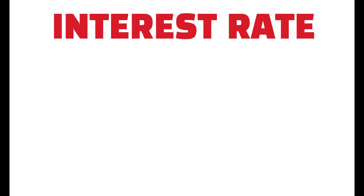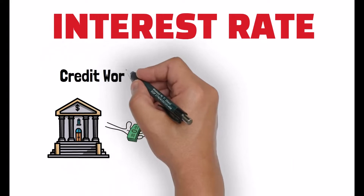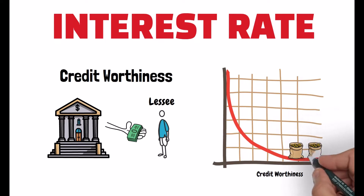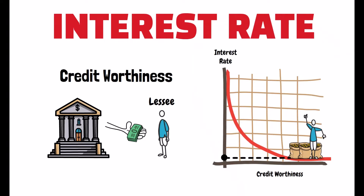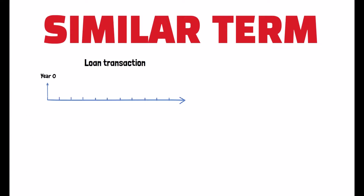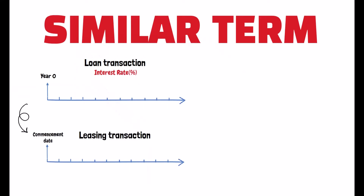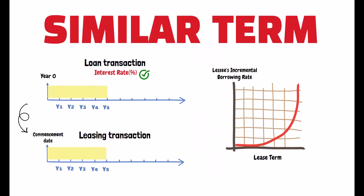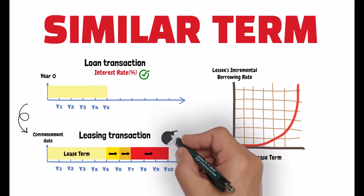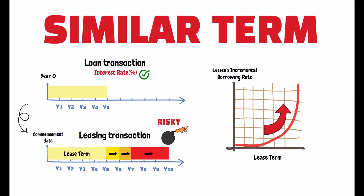The interest rate that the lessee would have to pay reflects the creditworthiness of the lessee. The higher the creditworthiness of the lessee, the lower the risk that the lessee defaults on lease payments, and therefore the lower the interest rate that the lessee would be charged. The interest rate should also reflect the term of the lease arrangement. If the lease term is 5 years, you cannot use the interest rate for a borrowing transaction with a different term, say 10 years. The reason is that the lessee's incremental borrowing rate varies as the length of the lease term changes. The longer the term of the lease, the higher the risks associated with the transaction, and therefore the higher the lessee's incremental borrowing rate.